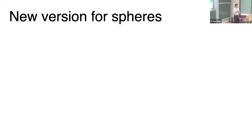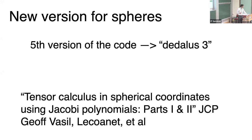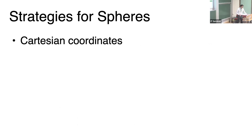We've now moved to a new version of the code that can run simulations in spherical geometry, which is particularly relevant for many people here. This is the fifth version of the code, so naturally we call it Dedalus 3 — Dedalus 2 was the fourth version. I'd like to describe some of the methods we use to do these simulations in spherical geometry.